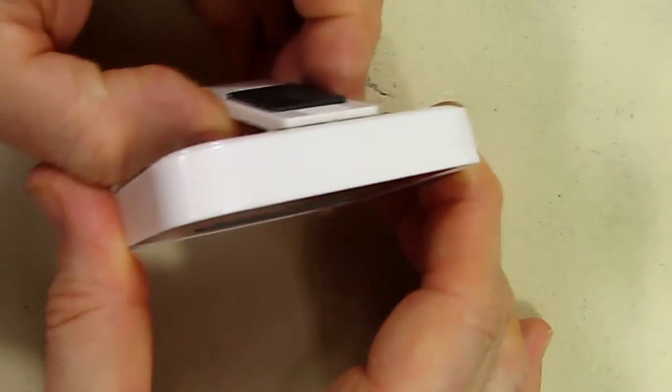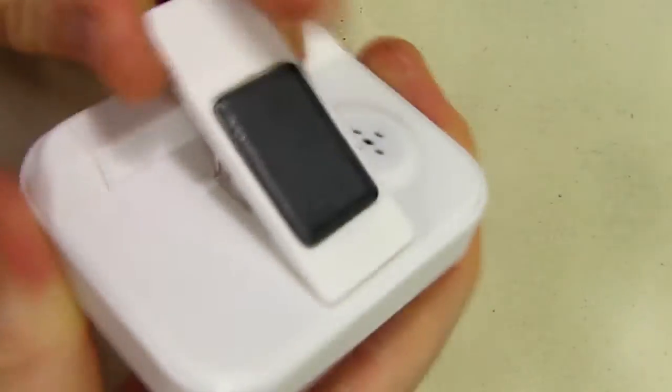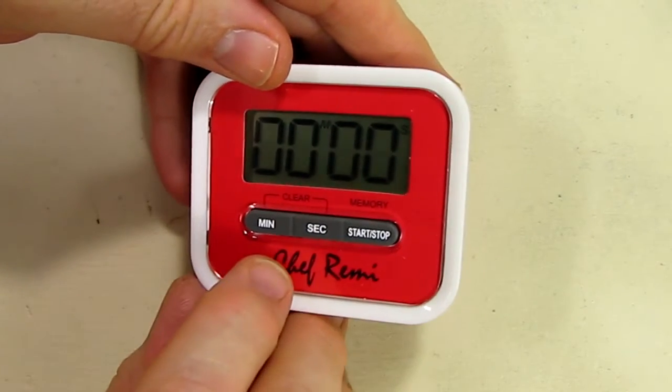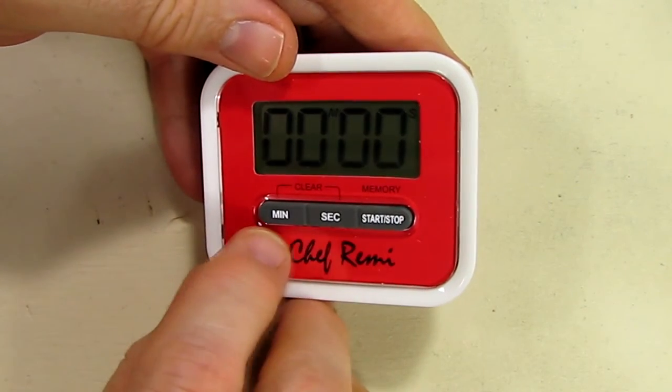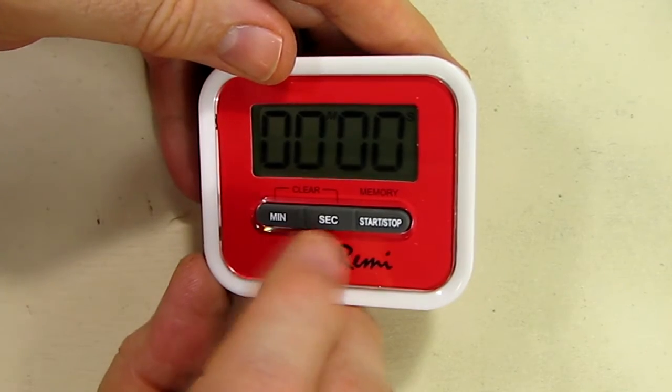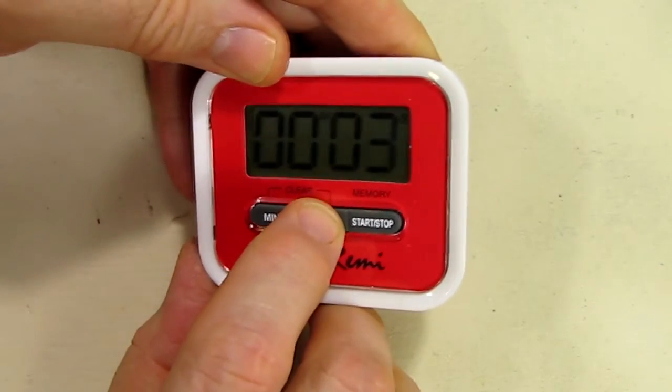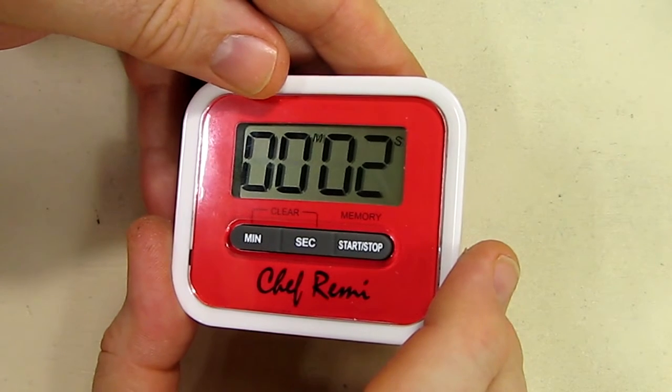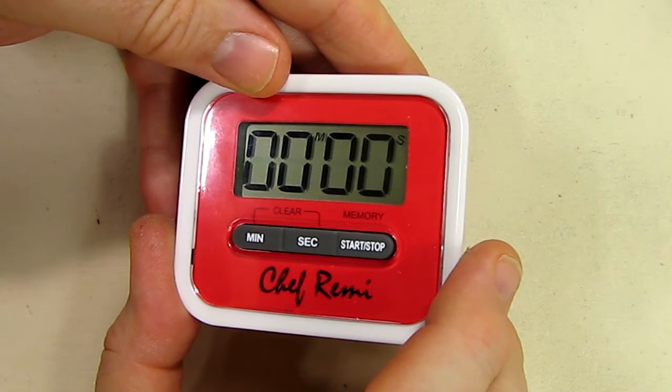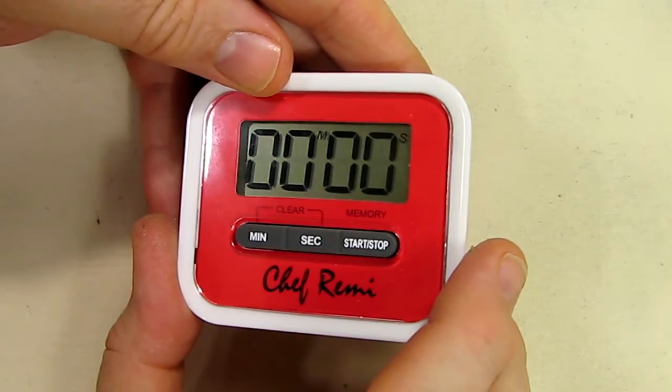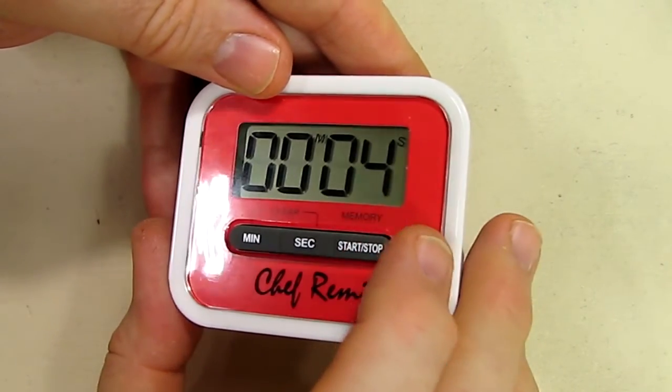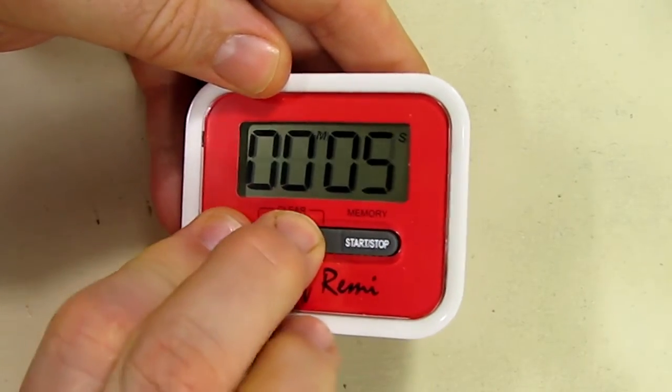This operates pretty much like you'd expect a timer to operate. You can count down primarily by putting in minutes and seconds. So if I put in four seconds and I hit start, it's going to count down and then beep for 30 seconds. You can hit any button to stop it, and then it goes right back to the previous setting of four seconds.